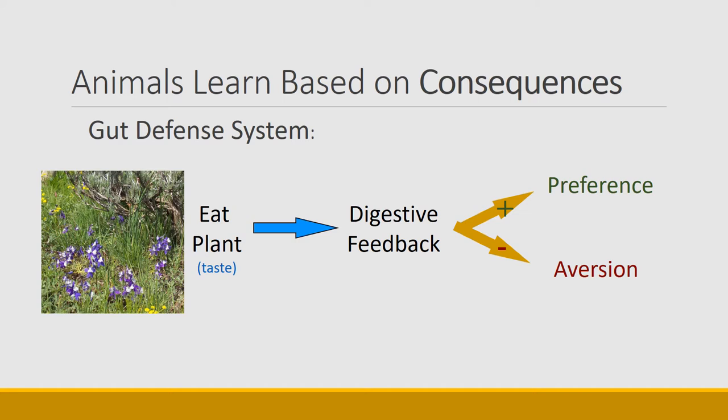If the food makes the animal feel nauseous or the animal starts to feel worse, then the animal will form an aversion to the taste. In other words, animals can learn to avoid foods that make them ill.